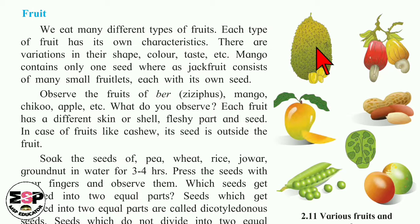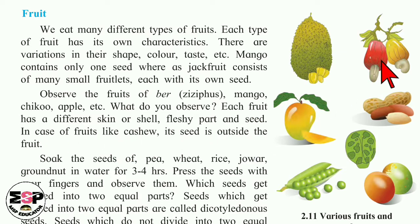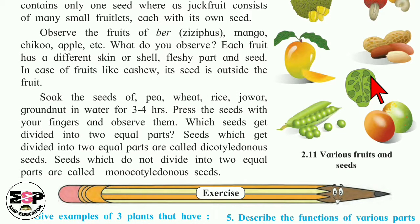Observe the fruits of ber, mango, chiku, apple, etc. Each fruit has a different skin or shell — the outer covering is different for every fruit — then a fleshy part and seed. In some fruits like cashew, the seed is outside the fruit. You can see here that the cashew nut seed is on the outside of the fruit.